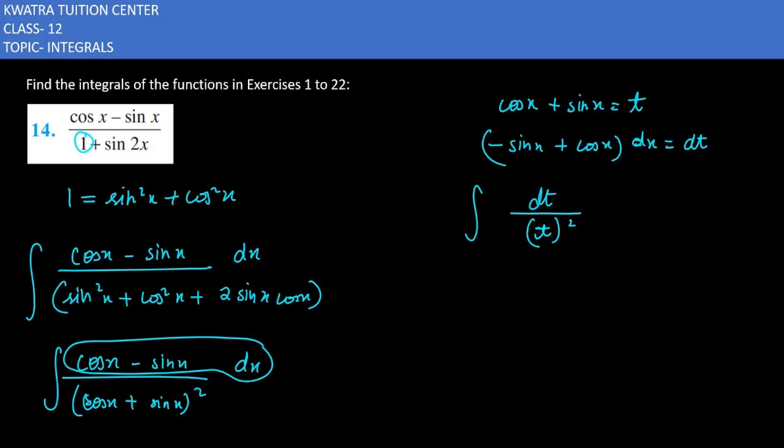1 by t square, how do you find the integral? t to the power negative 2. It will be t to the minus 2 plus 1, minus 2 plus 1, and plus a constant.